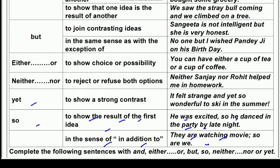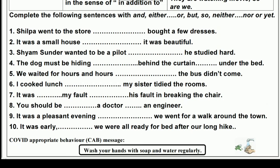So this is how we use these conjunctions. You can watch this video again and it will become even clearer. Now we'll move on to the exercise questions. You have to complete the following sentences using: and, either...or, but, so, neither...nor, or yet.